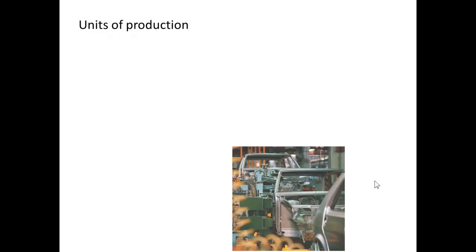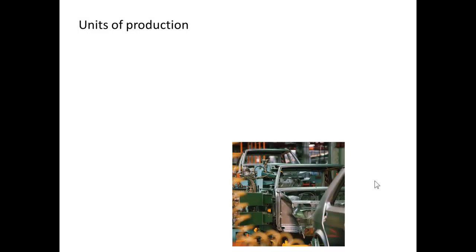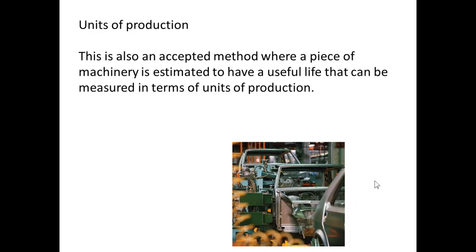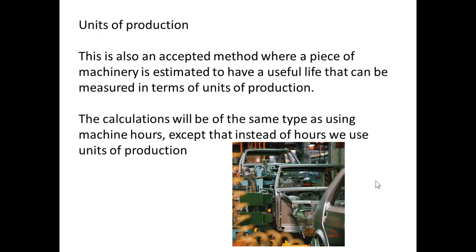Finally, we could also use something called units of production. This might apply to a car assembly line where you anticipate that only so many units — so many cars — are going to be produced. This means we can measure the use of the machinery on that production line in terms of units of production. The calculations are of the same type as when we used machine hours, except that instead of machine hours, we use units of production as the measurement.